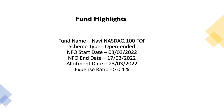The start date is 3rd March and the end date is 17th March. The allotment date is 23rd March. The expense ratio of this fund is 0.1%. As usual, NAVI is a passive fund.